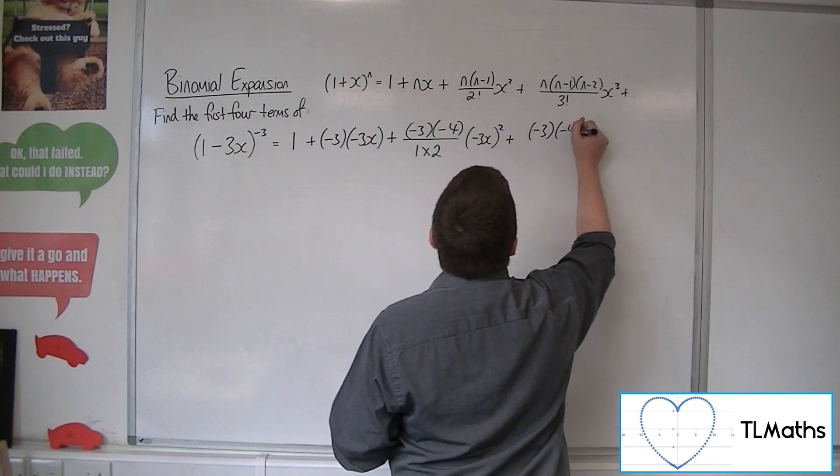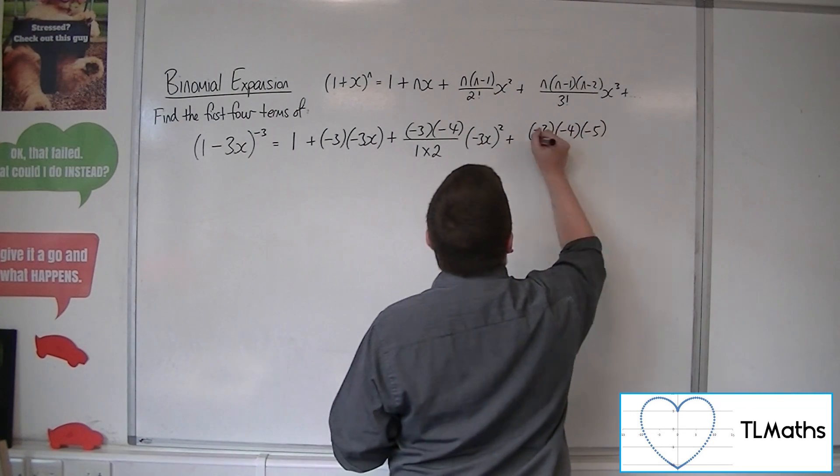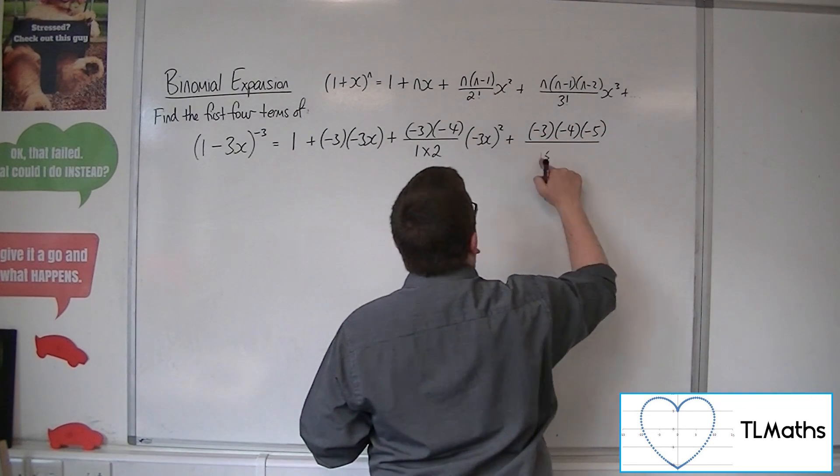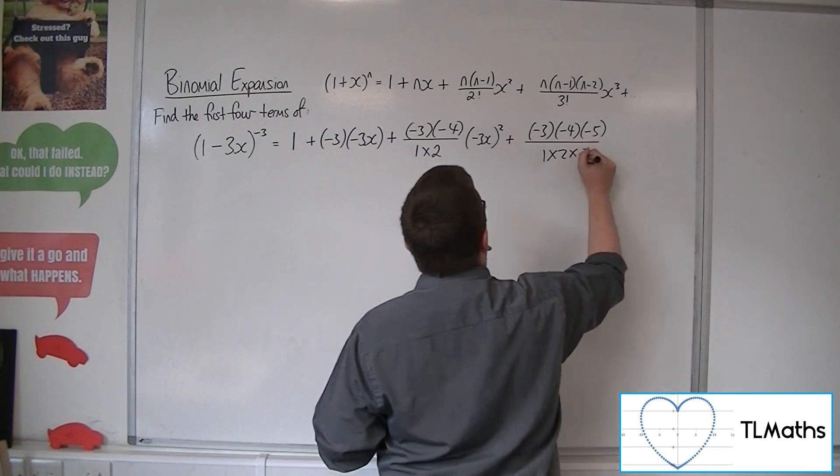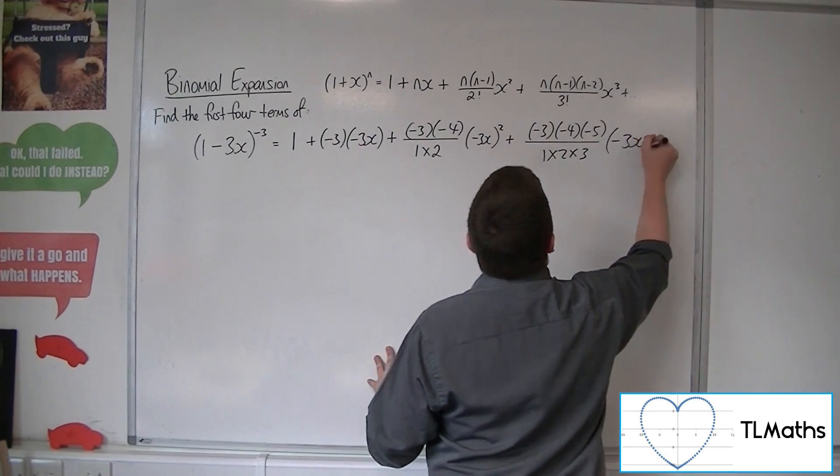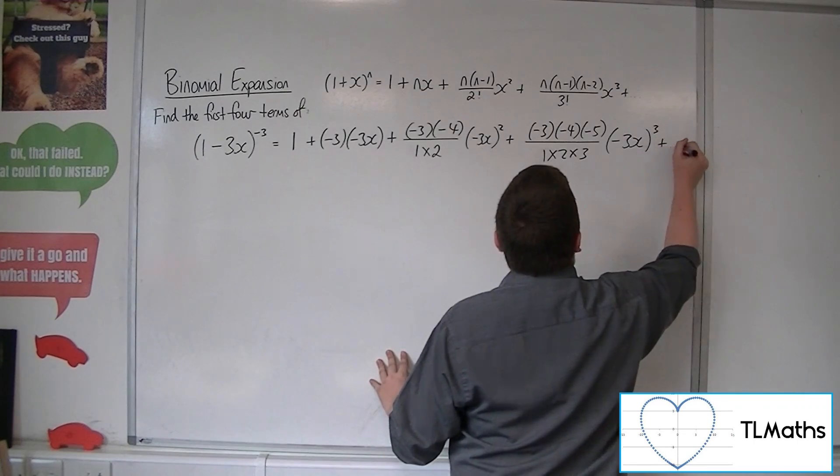Now we've got minus 3 times minus 4 times minus 5 over 3 times 2 times 1. I'll be consistent: 1 times 2 times 3, times by minus 3x cubed plus other terms.